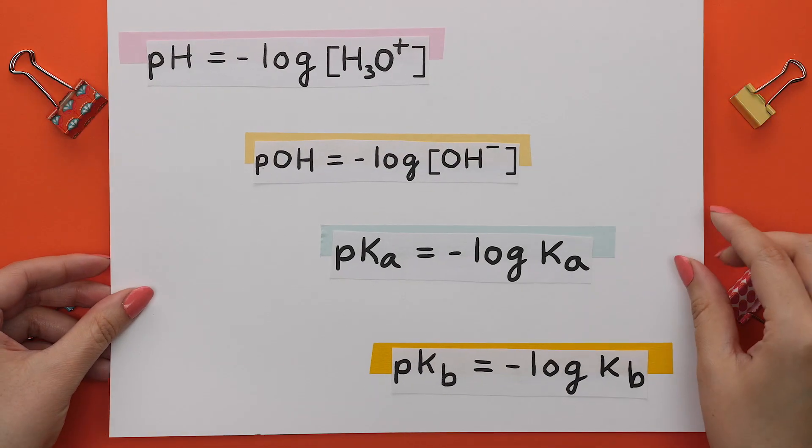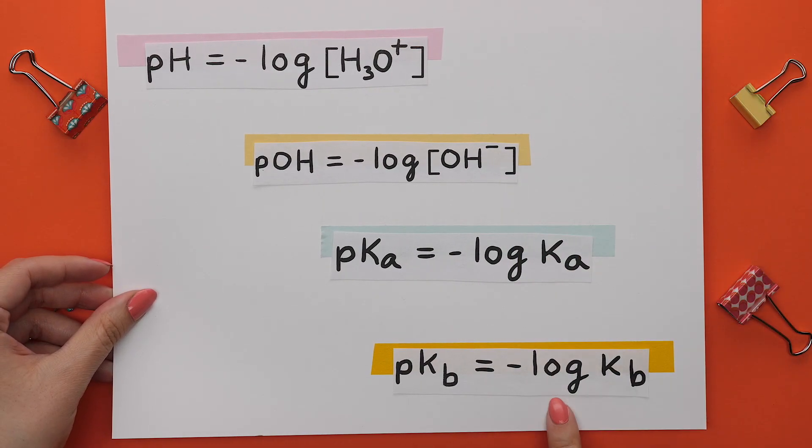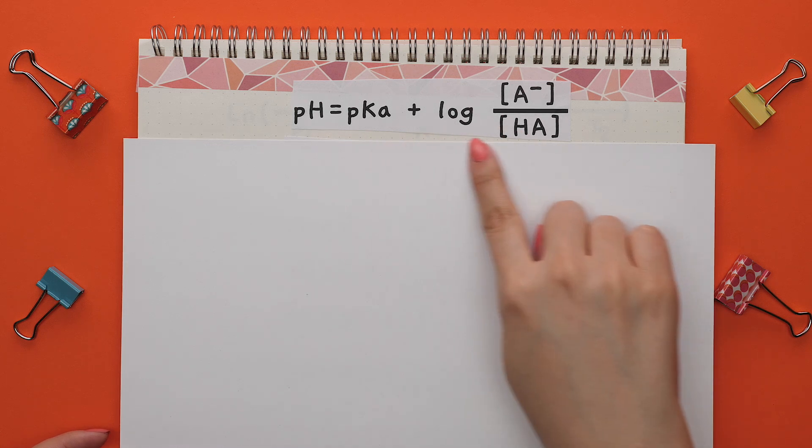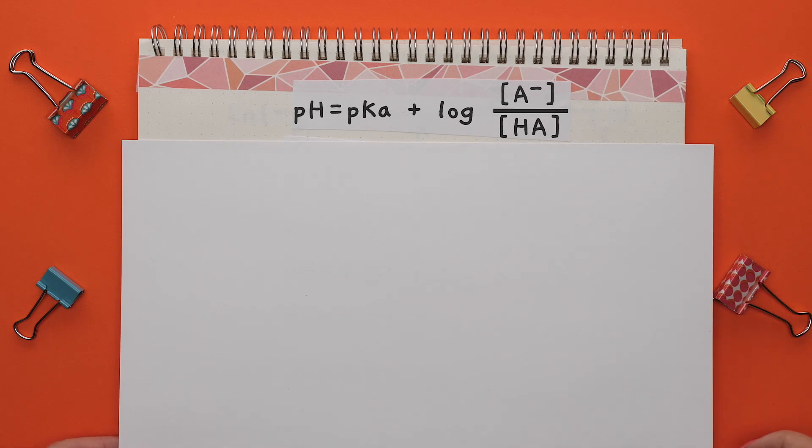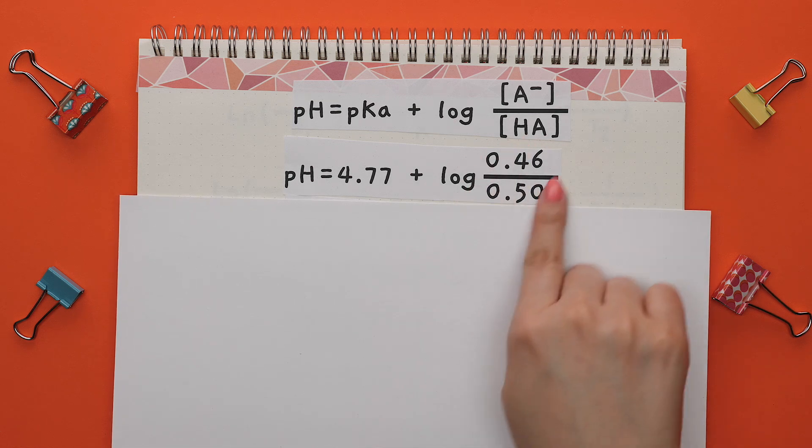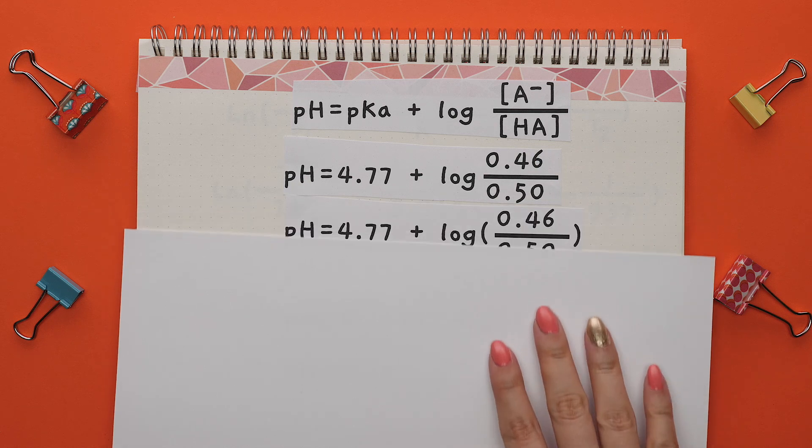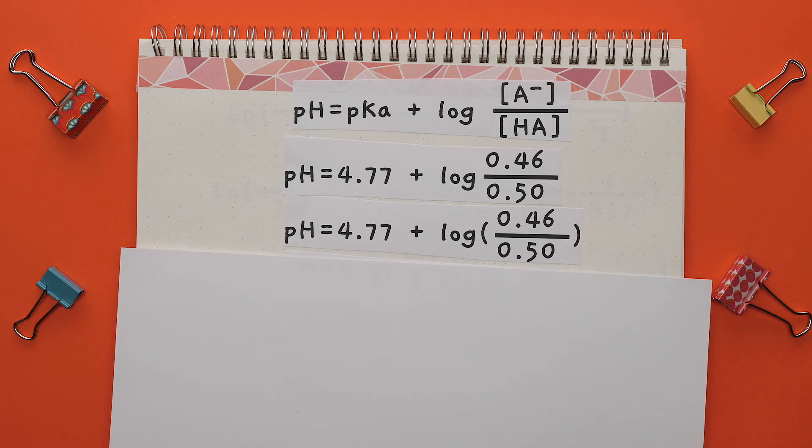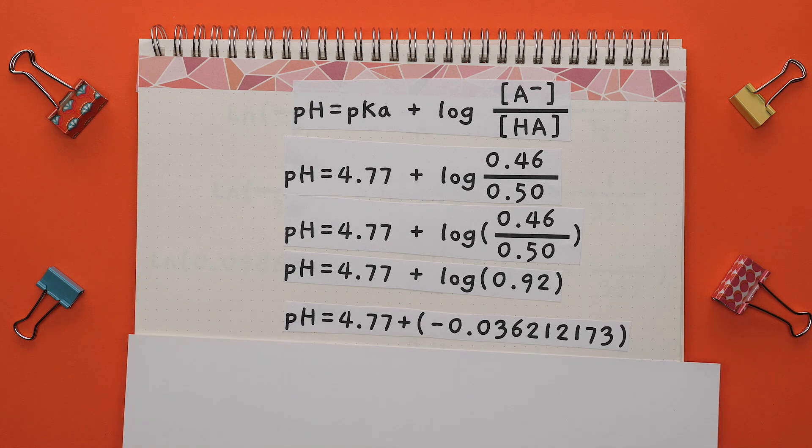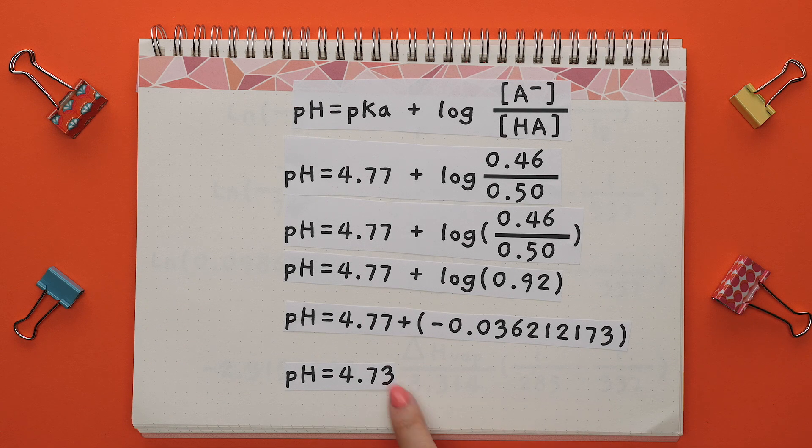You will see this same type of formula a lot in Chem 1 and 2. Let's take the log of a fraction. You will use this type of equation in Chem 2 when you are asked to find the pH of a buffer. Let's say this was your equation with all the values needed. When taking the log of a fraction, know that whatever is next to a log is actually in parentheses. So we need to do what is in parentheses first, then take the log of this value and continue with this formula to get this answer.